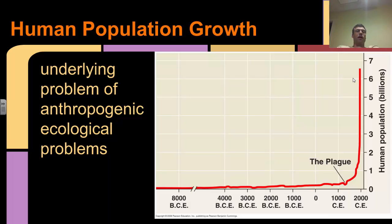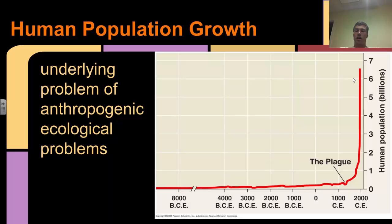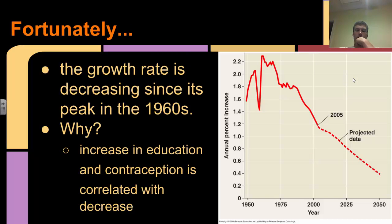Let's talk briefly about human population growth and then we'll be finished. Human population growth is the underlying problem of all anthropogenic - meaning human-caused - ecological problems. You can see that the human population really has not started increasing significantly until the last about 500 years or so. The rate of increase has been incredible and has generally been associated with the industrial revolution, although it began before that as well. We're now even past 7 billion, though this graph is obviously a few years old. Fortunately, the growth rate has been decreasing since it peaked in the 1960s.